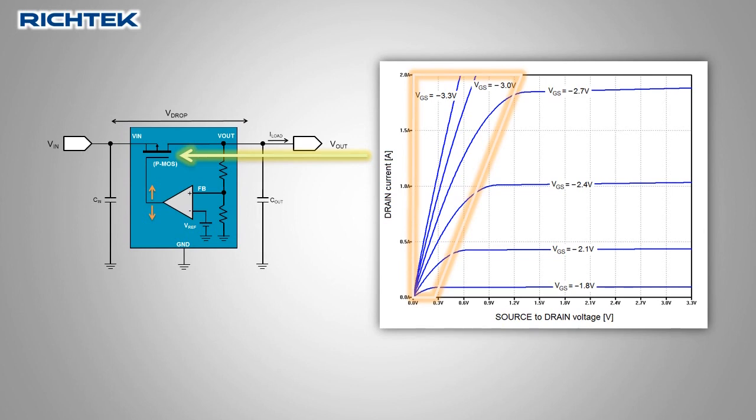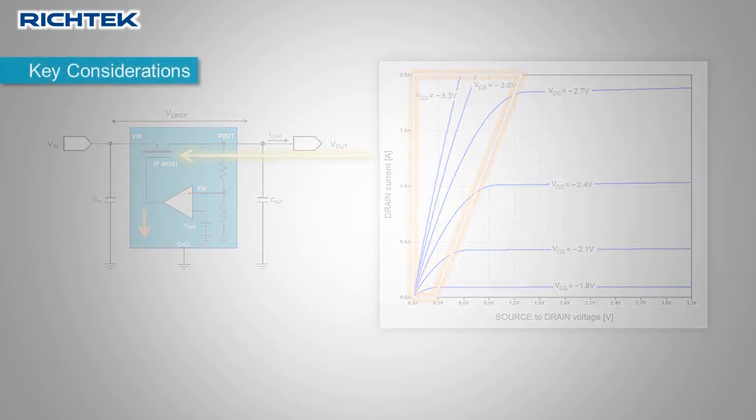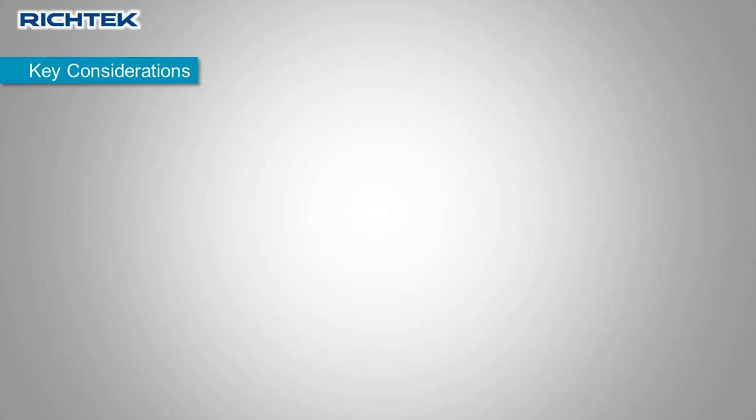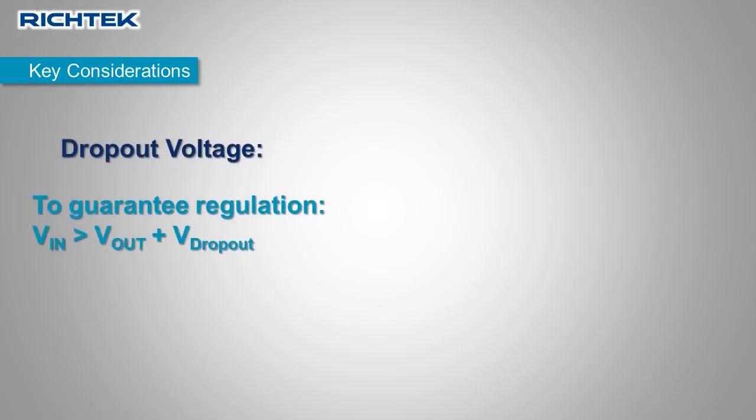In the ohmic region the MOSFET becomes resistive and the error amplifier will pull the gate near ground level. At that point the output voltage cannot be regulated anymore. LDO dropout voltage is defined as the voltage drop across the regulator where the device can no longer regulate the output voltage.